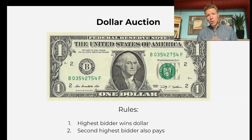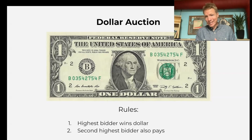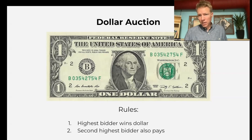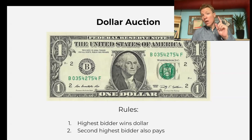The highest bidder will get the dollar just like a normal auction. You bid 90 cents and you're the highest bidder — you just paid 90 cents for a dollar bill, so you made 10 cents.